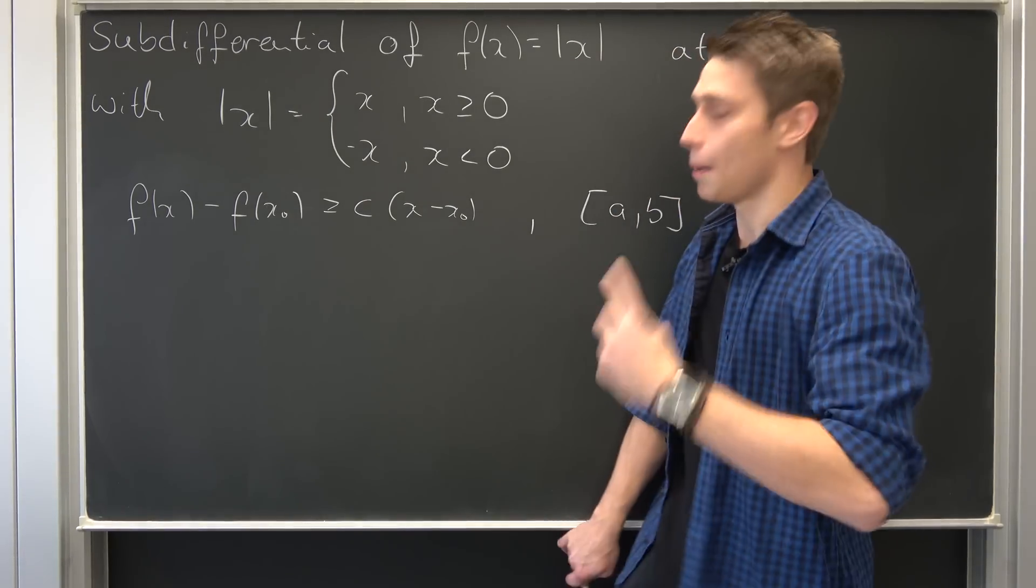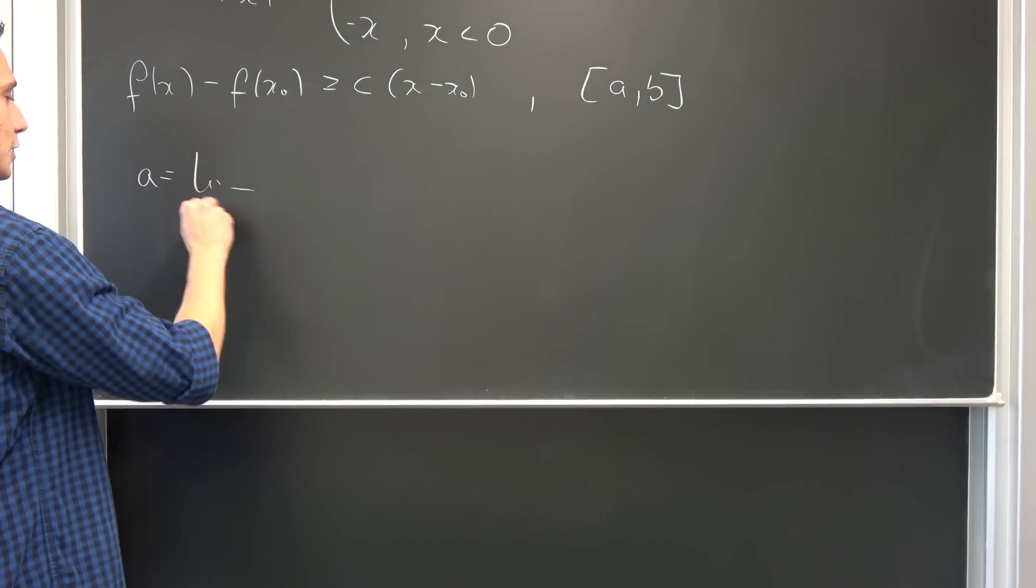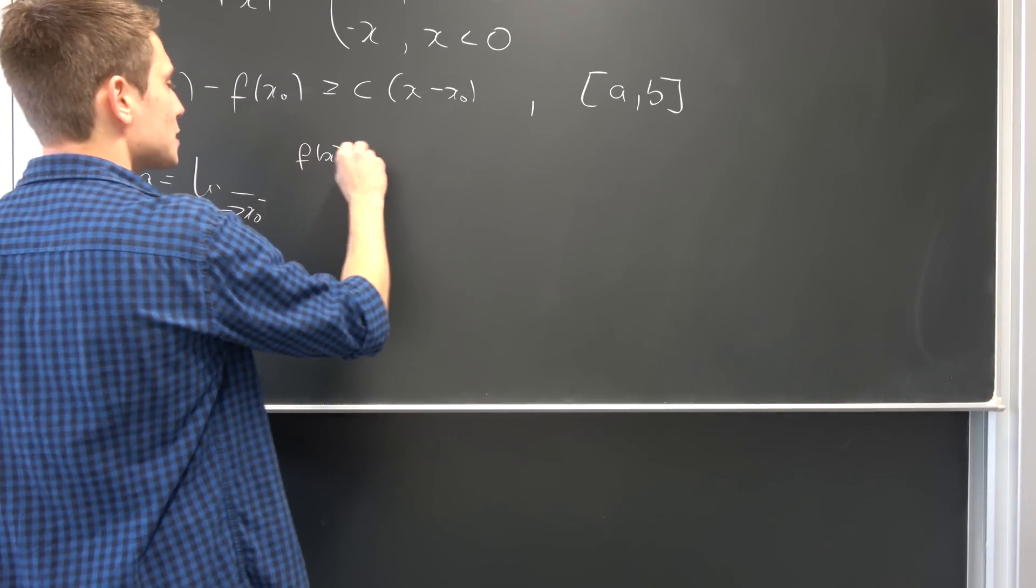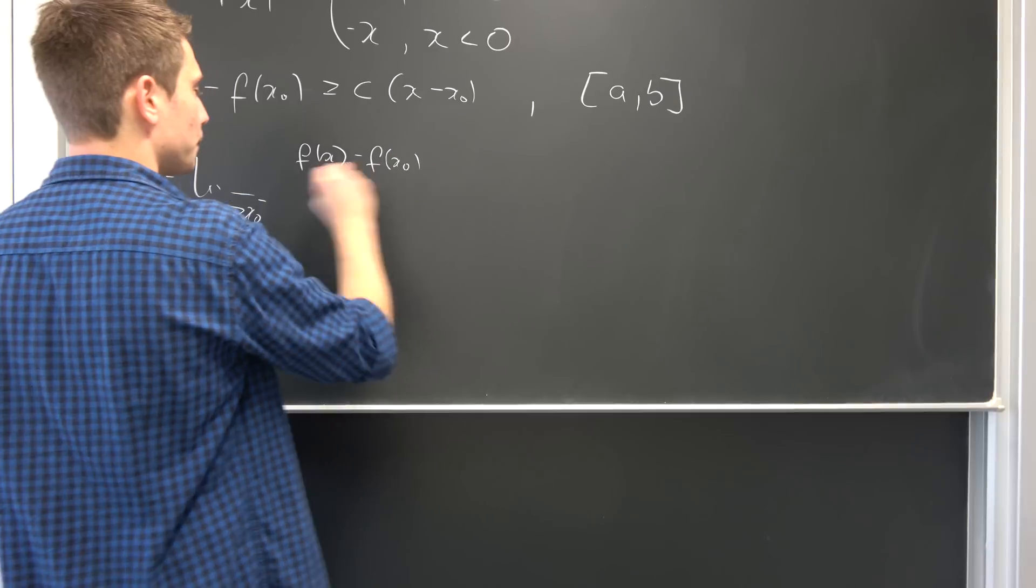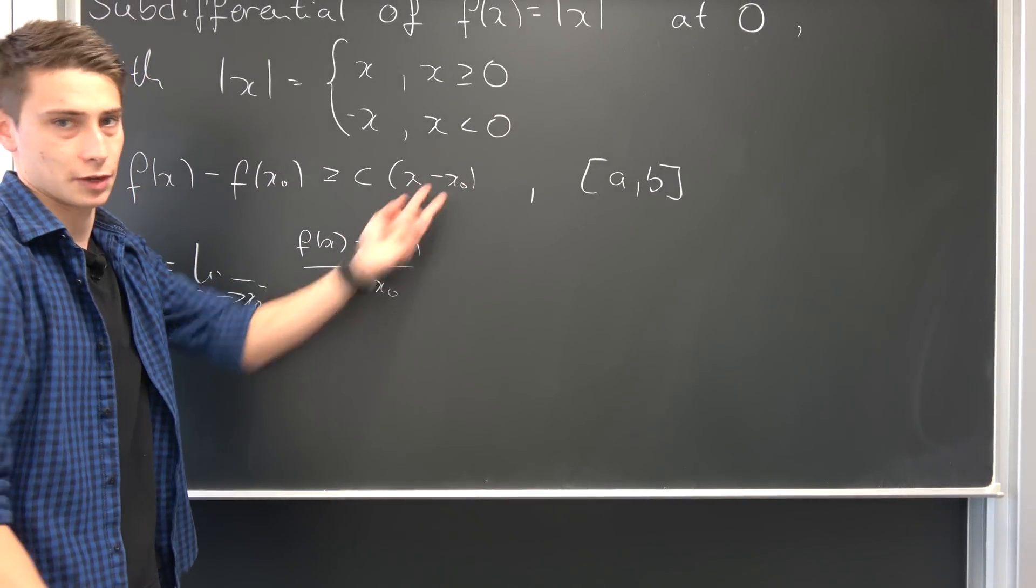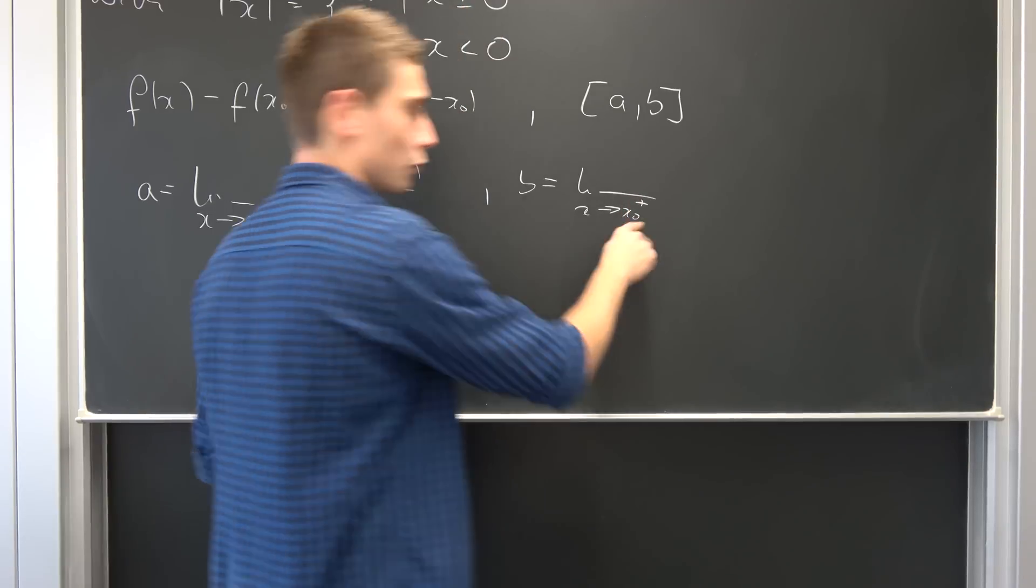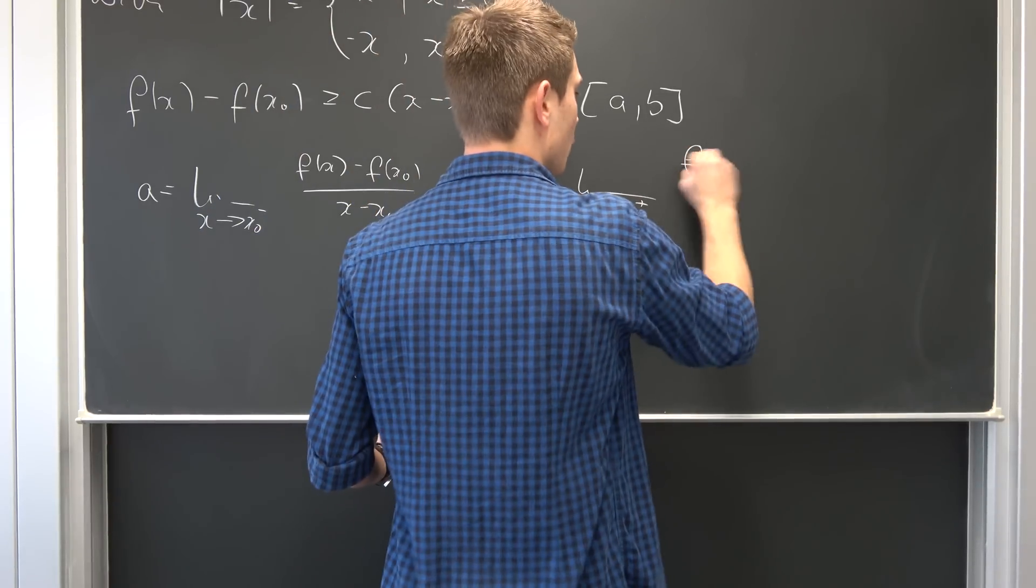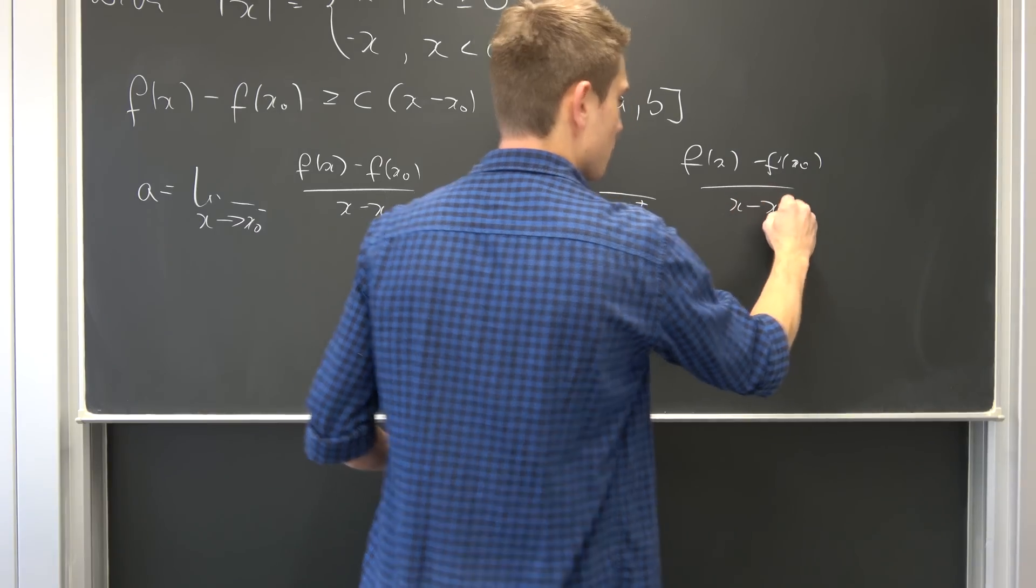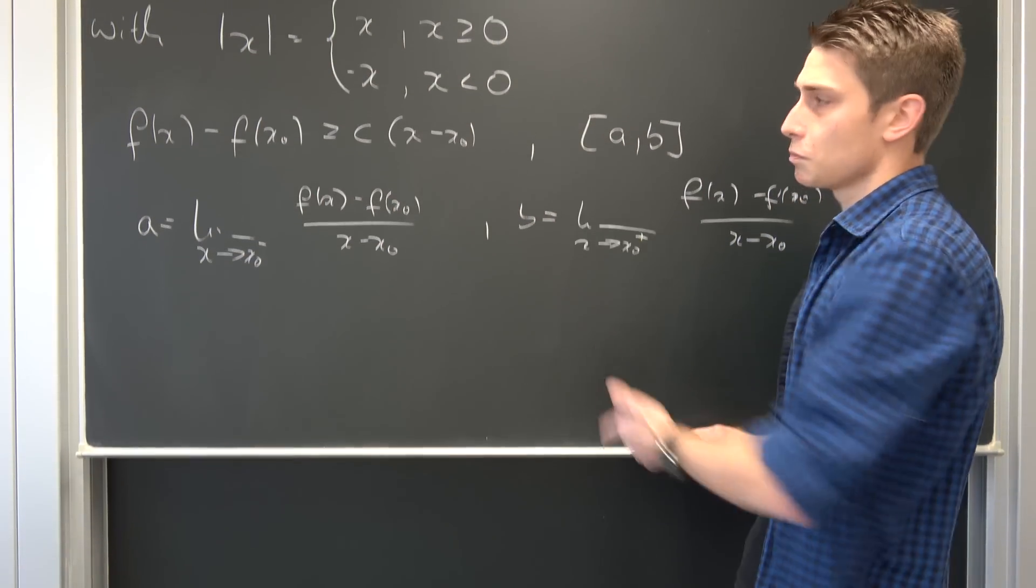So a is the left hand limit as x approaches x_0 from the left (x_0 minus) of [f(x) - f(x_0)] / (x - x_0). At the moment we don't want this to be equal to zero, that's why we can divide by it. Same for the right hand limit: that's the limit as x approaches x_0 from the right (x_0 plus) of [f(x) - f(x_0)] / (x - x_0). Those are all the tools we need to derive all the sub-derivatives, the subdifferential of the absolute value of x.